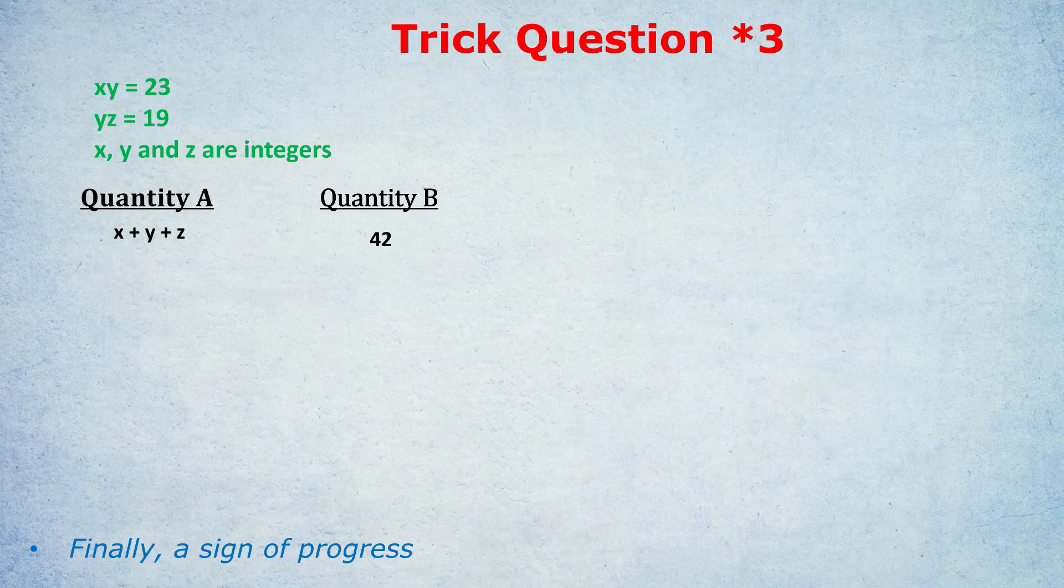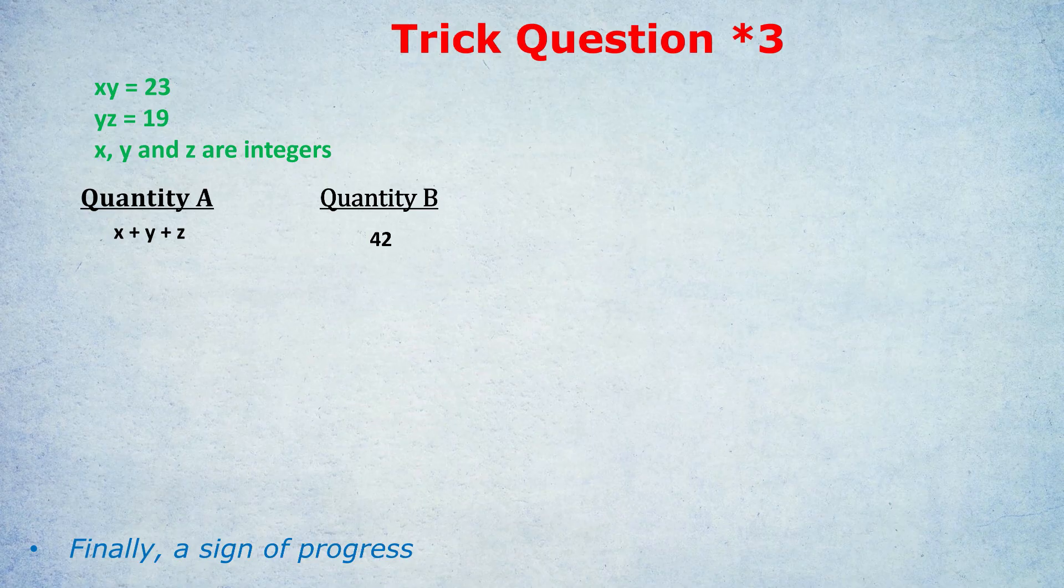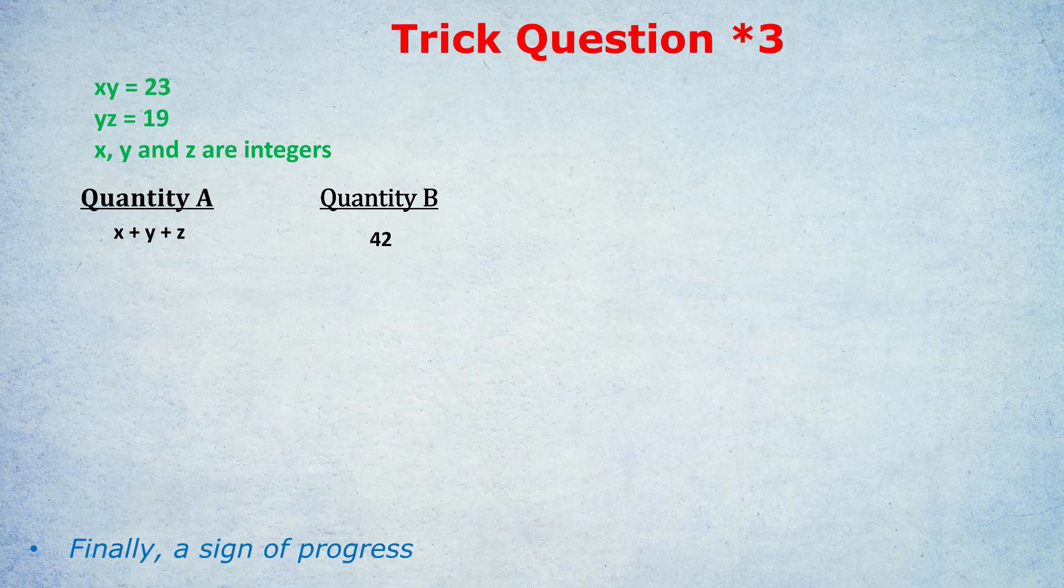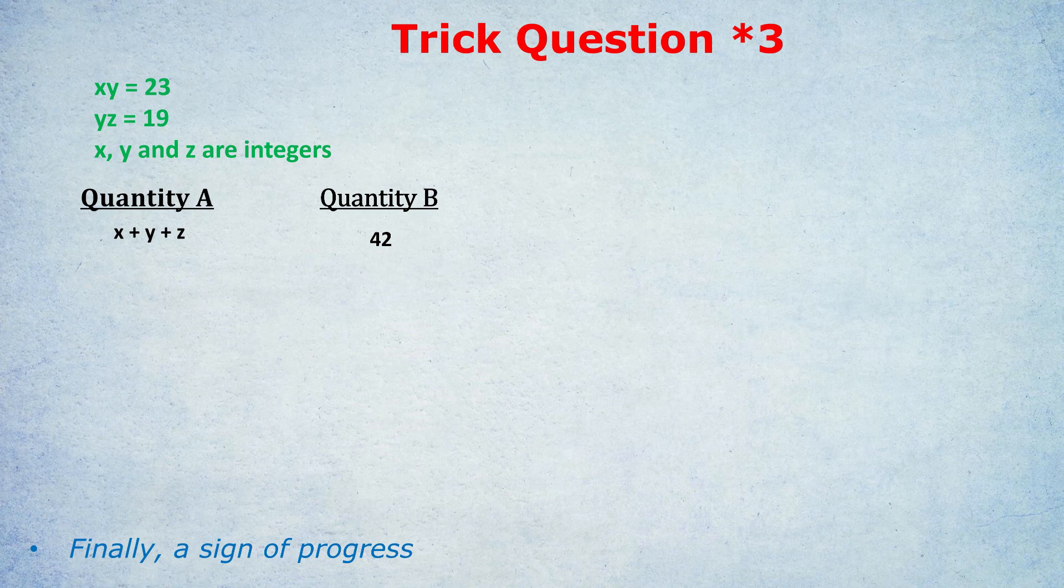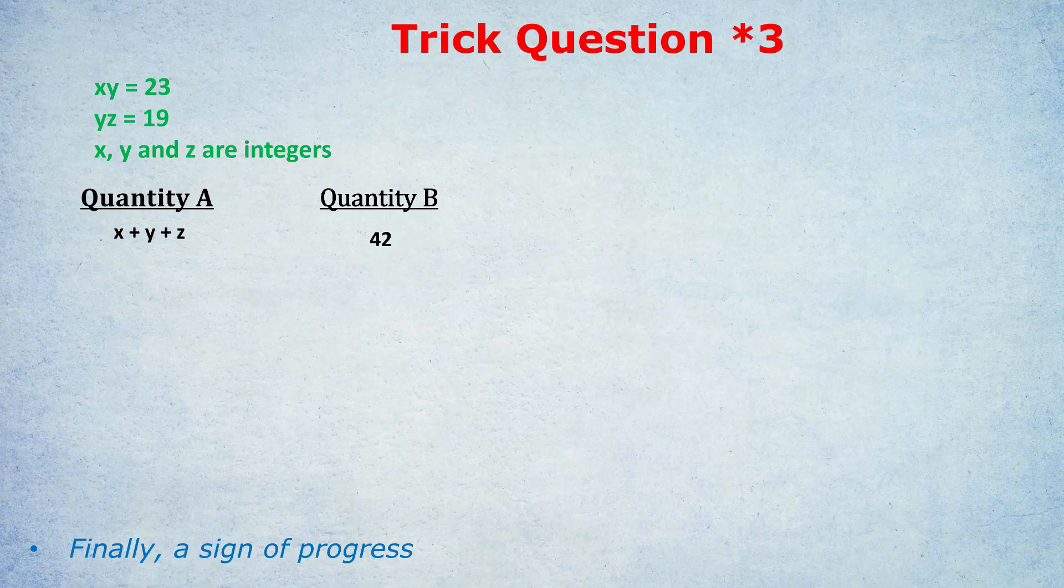The trick, and I know some of you are now screaming at the video telling me what the trick is, is that it never said that x, y, and z are positive. A very classic mistake. I remember in my final practice test before the real thing, I got one of the questions wrong based on forgetting that they could all be negative. So I don't want you to make that same mistake.